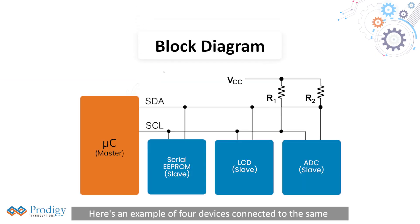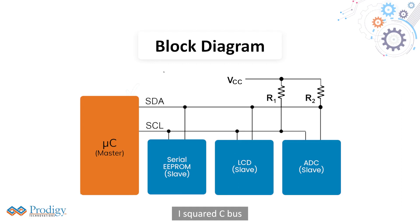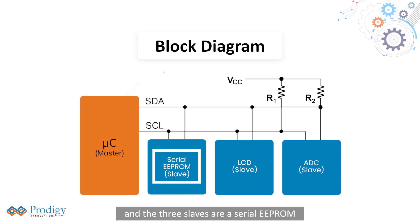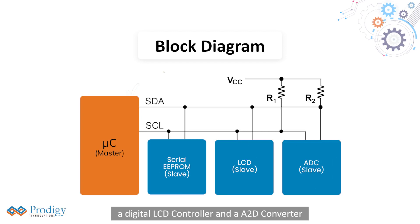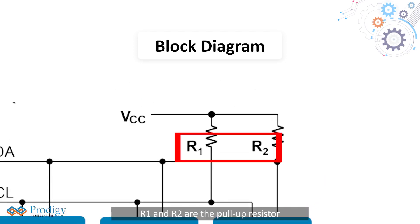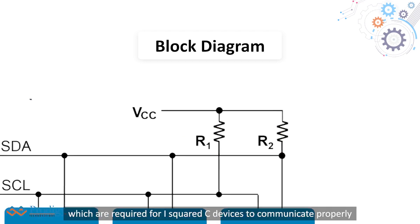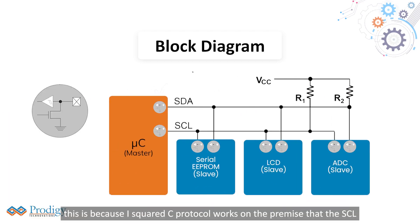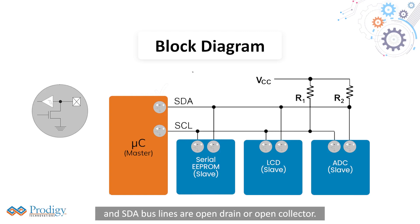Here's an example of four devices connected to the same I2C bus. The microcontroller is the bus master, and the three slaves are a serial EEPROM, a digital LCD controller, and an A2D converter. R1 and R2 are the pull-up resistors, which are required for I2C devices to communicate properly. This is because the I2C protocol works on the premise that the SCL and SDA bus lines are open drain or open collector.